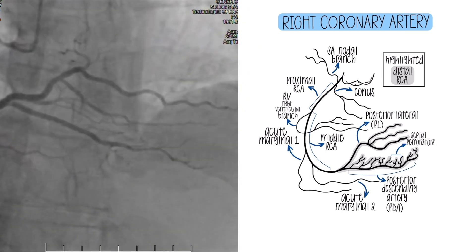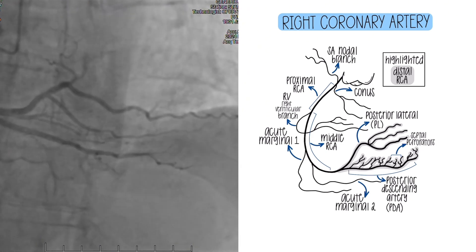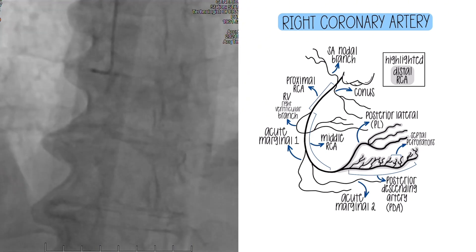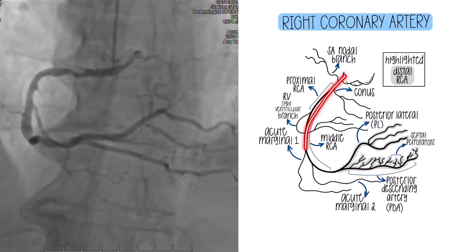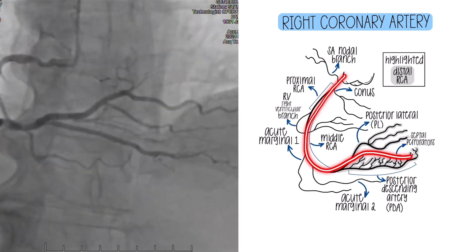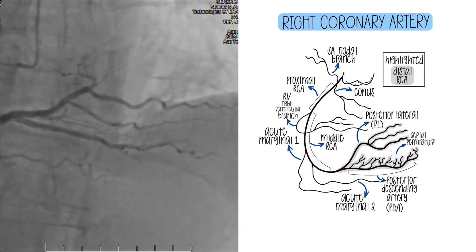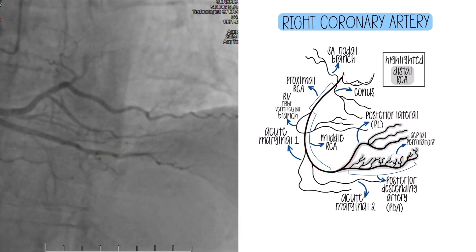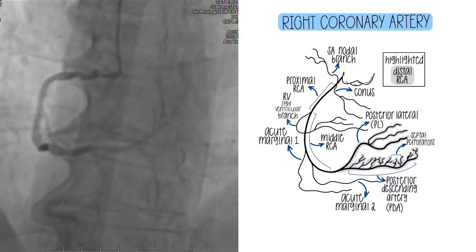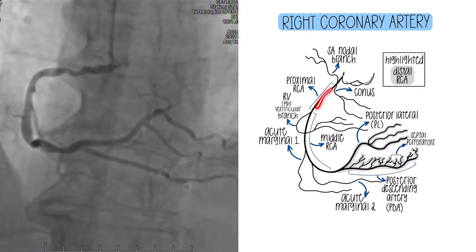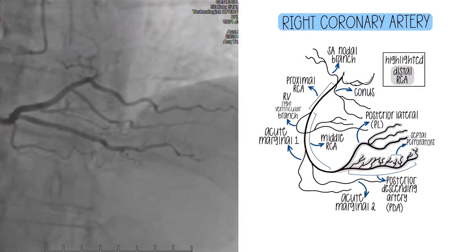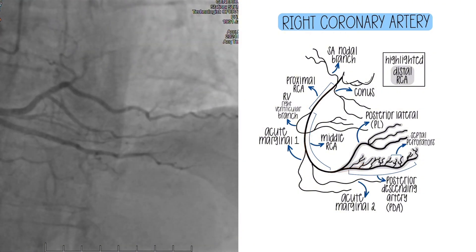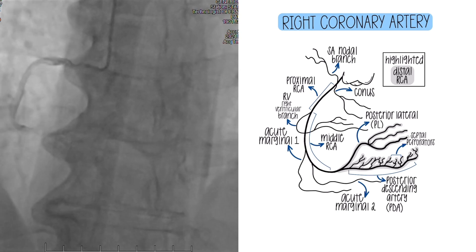We can segment the right coronary artery because it is very long. Like we said before, if we read in a report that there's a stent somewhere, I want to know — is it proximal, mid, or distal? That way I know what I'm looking at when reviewing the angiograms.